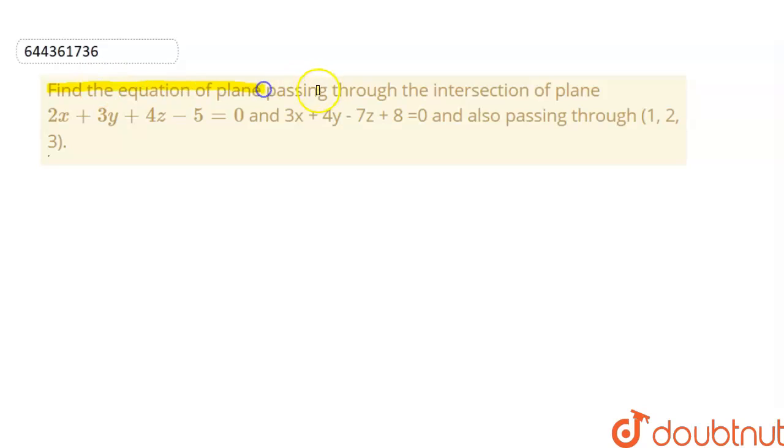Find the equation of the plane passing through the intersection of plane 2x + 3y + 4z - 5 = 0 and plane 3x + 4y - 7z + 8 = 0. Also passing through the point (1, 2, 3).